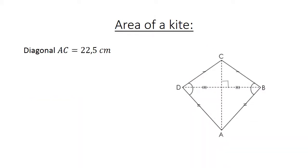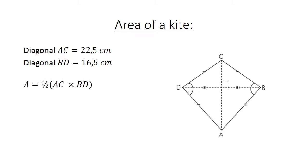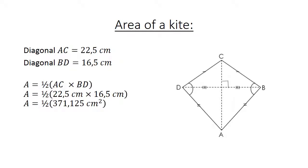Area of a kite example. We have diagonal AC equals 22.5 centimeters and BD equals 16.5 centimeters. Area equals a half in brackets AC times BD, which equals a half in brackets 22.5 centimeters times 16.5 centimeters, equals a half of 371.25 cm squared, which equals 185.625 cm squared.